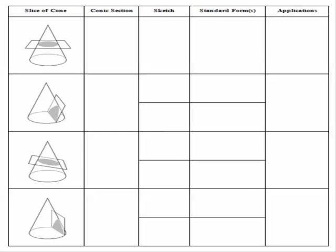We're filling out our third row, and we're talking about a conic section — a section of a cone. What we're going to do this time is slice the cone with a plane through both sides of the cone, not parallel like the circle, but at a slant. When you do that, the two-dimensional figure you're cutting out is a stretched circle that we call an ellipse.